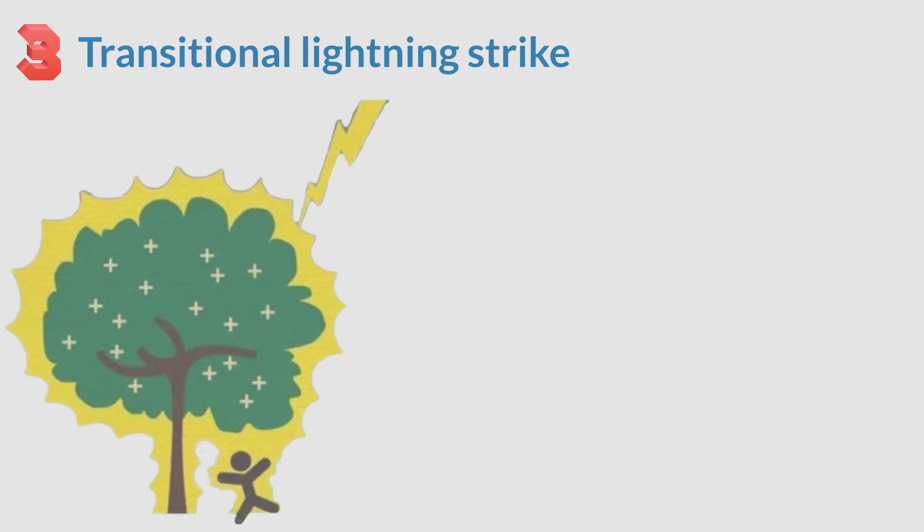The third type is a transitional lightning strike. For example, if you stand near a tree, lightning will strike the tree, and then the electricity from the tree will be released into your body. This type accounts for about 35% of deaths due to lightning.